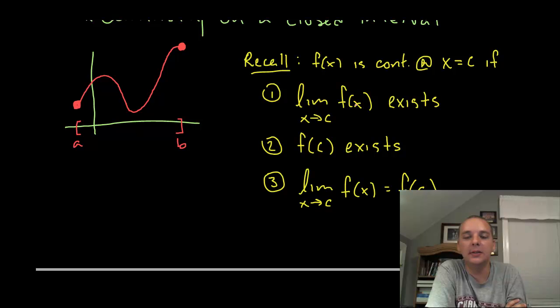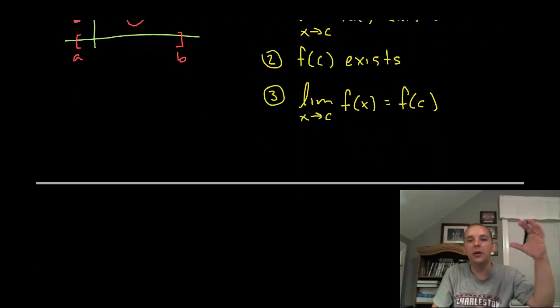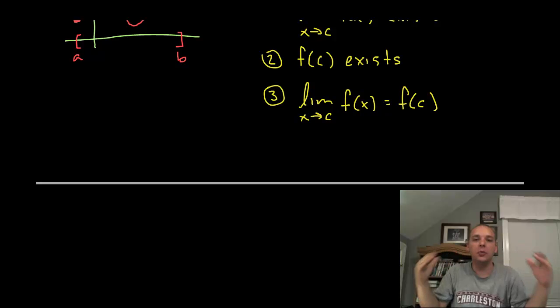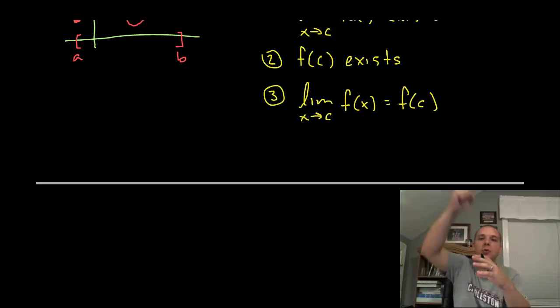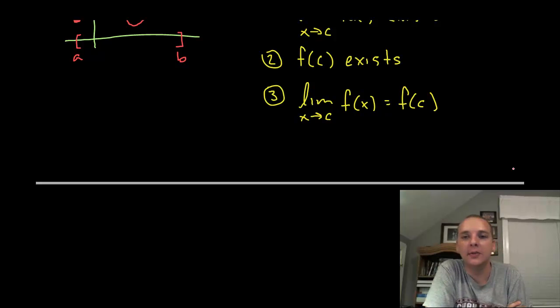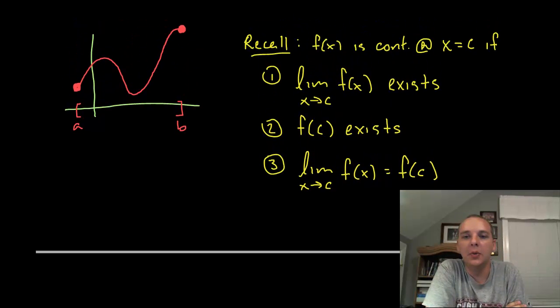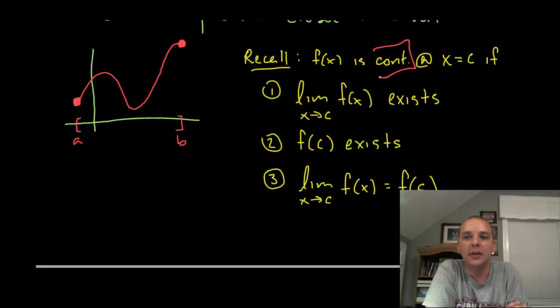So if the limit exists and the function is defined there because a limit might exist but the function might not be defined if there's a hole or anything. And the nail in the coffin is that the limit that existed in number one and the y value that exists because of number two, they have to match each other. But basically if a limit exists and the function value matches what that limit is at x equals c, we would say that our function is continuous.